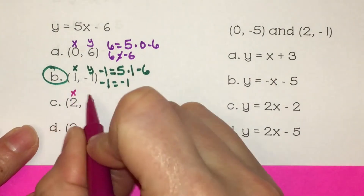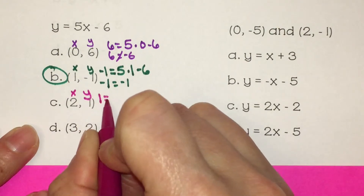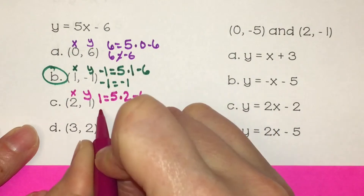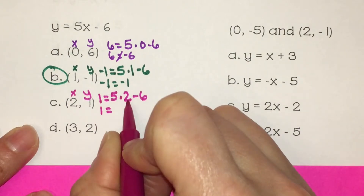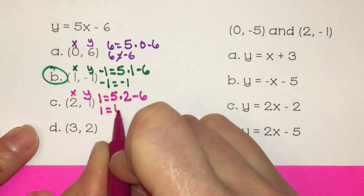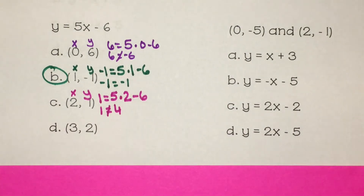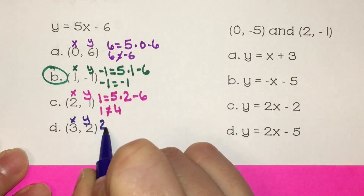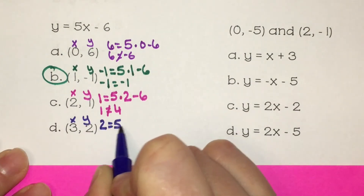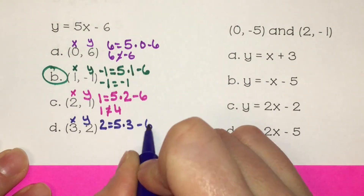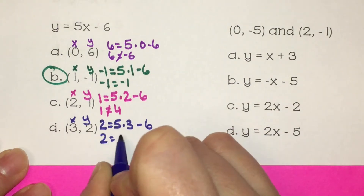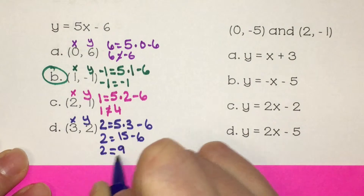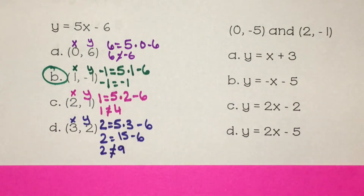Double-check. We have x and y: y which is 1 equals 5 times our x value which is 2, minus 6. 1 equals 5 times 2 is 10, and 10 minus 6 is 4 — so the two sides are not equal. And the last one, plug in 3 for x and 2 for y. We have y which is 2 equals 5 times our x value which is 3, minus 6. 2 equals 5 times 3 is 15, and 15 minus 6 is 9 — so the two sides are not equal. So B is the only one that worked.